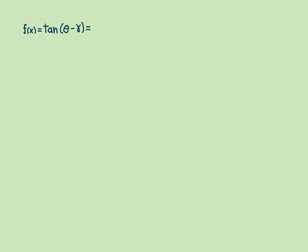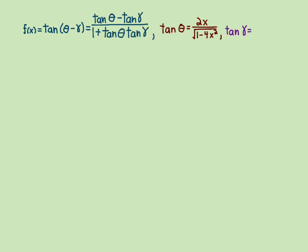We have from the previous page: f(x) equals tangent(theta minus gamma), which equals tangent theta minus tangent gamma over 1 plus tangent theta times tangent gamma. Tangent theta equals 2x over the square root of 1 minus 4x squared, and tangent gamma equals the square root of 1 minus x squared over x. I just need to plug these two values in for tangent theta and tangent gamma in this formula.